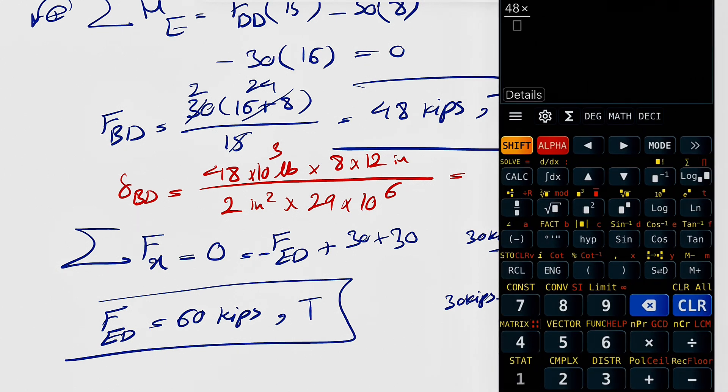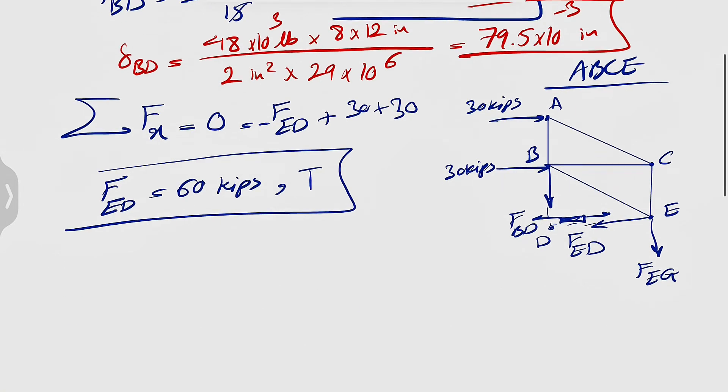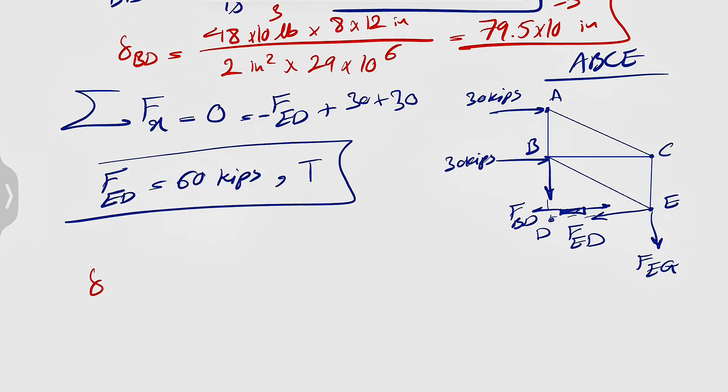So 48 times 1,000 times 8 times 12 divided by 2 times 29 times 10 to the 6th. And this will be basically 79.5 times 10 to the minus 3 inches. That's the answer for member BD.